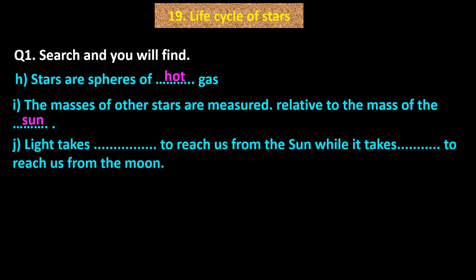J. Light takes dash dash dash to reach us from the sun while it takes dash dash dash to reach us from the moon. Answer: 8 minutes; 1 second. J. Light takes 8 minutes to reach us from the sun while it takes 1 second to reach us from the moon.